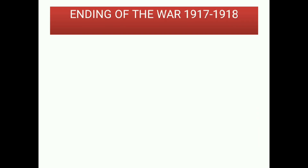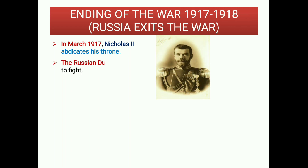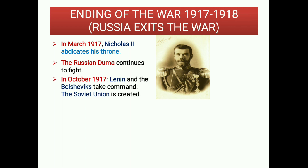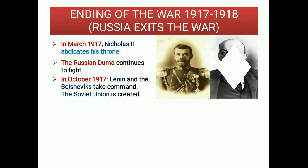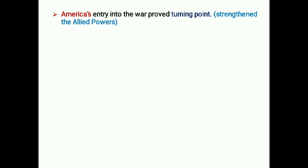Ending of the war (1917–1918): In March 1917, Tsar Nicholas II, ruler of Russia, abdicated his throne. The Russian Duma or parliament continued to fight, but in October 1917, Lenin and the Bolsheviks took command and the Soviet Union was created. In March 1918, the Soviets and Germans signed the Treaty of Brest-Litovsk, ending the war in the East. America's entry into the war proved a turning point, strengthening the Allied Powers.